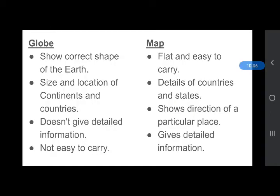What is the similarity? Both maps and globes show us the places on the earth — whether it is a country, states, capitals, or physical features. They both give us information about the places on the earth. Now here are the differences: a globe shows the correct shape, size, and location of continents and countries.